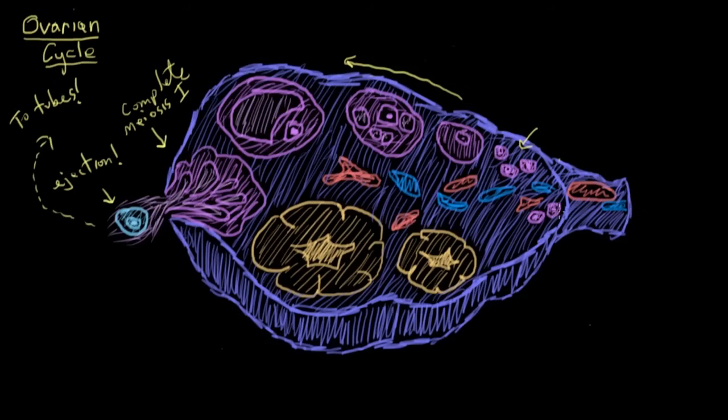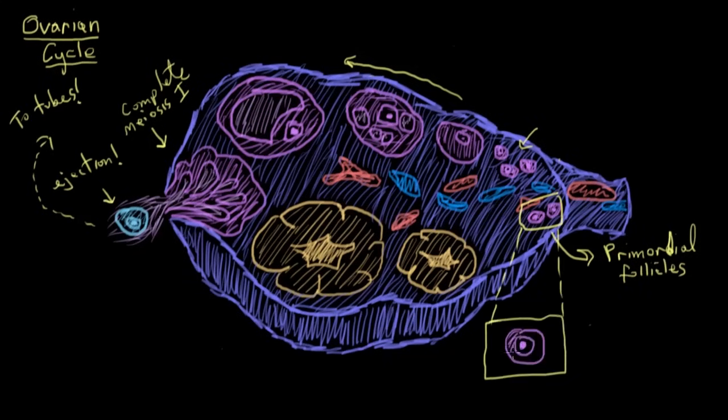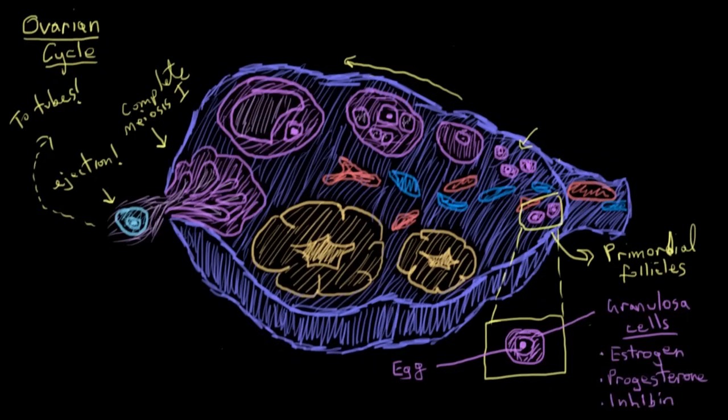So let's start from the beginning. Inside the ovaries, eggs develop in structures called follicles, these purple circles here, and they start off as primordial follicles. What a follicle is, I'll just blow that up for you, it's one primary oocyte, so an egg cell, surrounded by a layer of cells called granulosa cells. The granulosa cells develop and become more numerous as the follicle matures. Now the granulosa cells also secrete a few hormones: estrogen, a little progesterone, and some inhibin, and we'll talk about the functions of those a little bit later on.